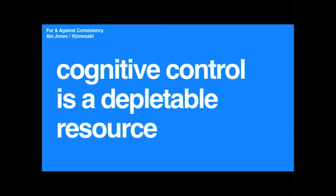The reason it's important to start thinking more about consistency is that cognitive control is a depletable resource. Think about how hungry you are right now — the hungrier you get, the worse you'll be at processing information. It goes the same with consistency: dealing with an inconsistent interface is mentally taxing. Having one that is consistent can help reduce the cognitive load on your users and, in turn, help them make better decisions.